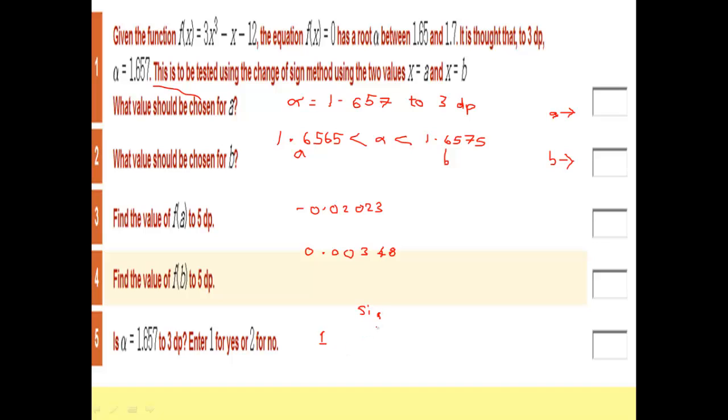We could write it out in full sign change, and that gives us the fact that 1.6565 is less than alpha, is less than 1.6575.